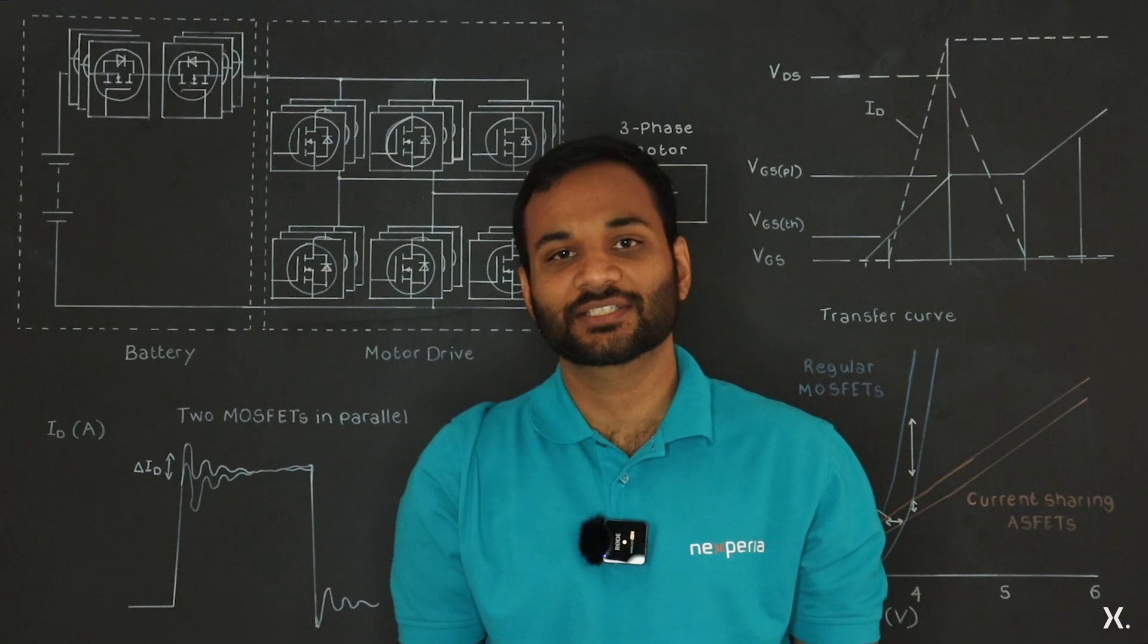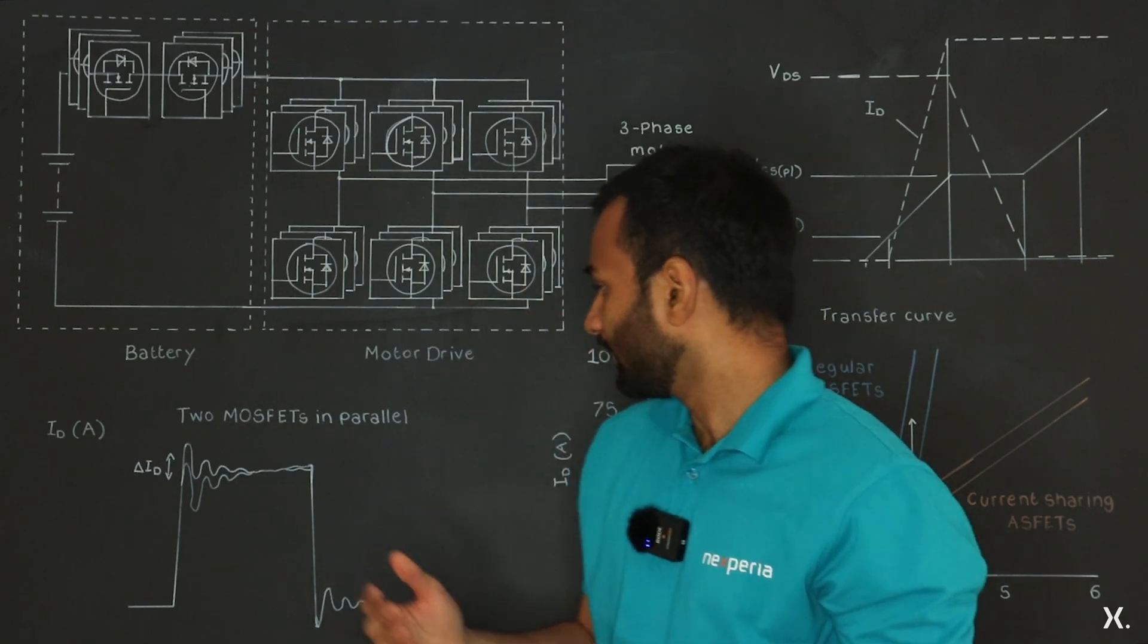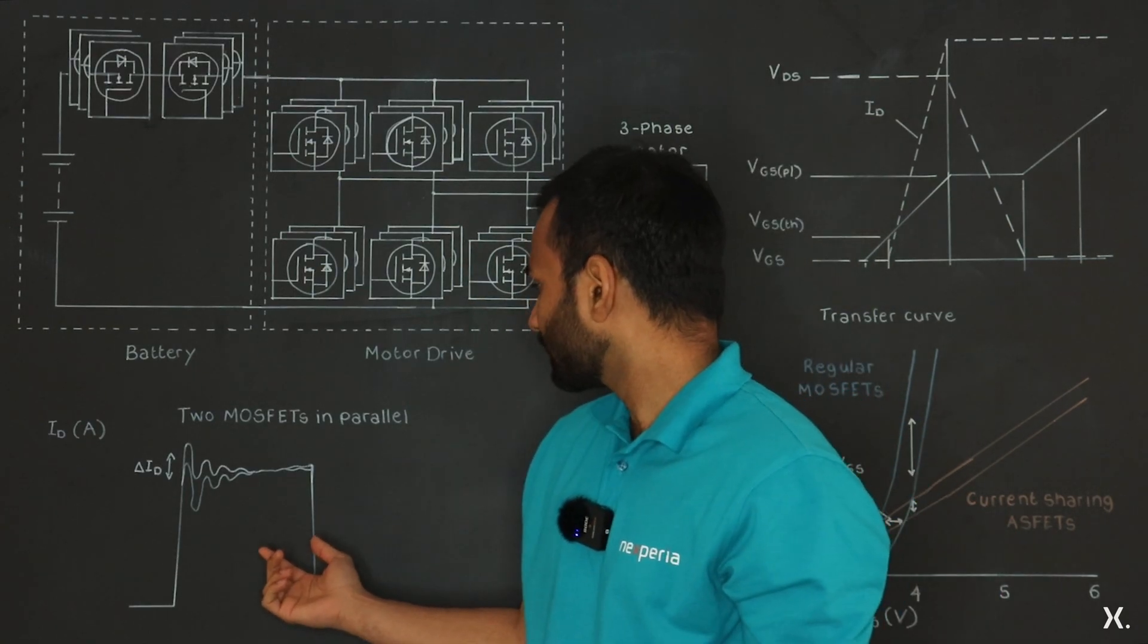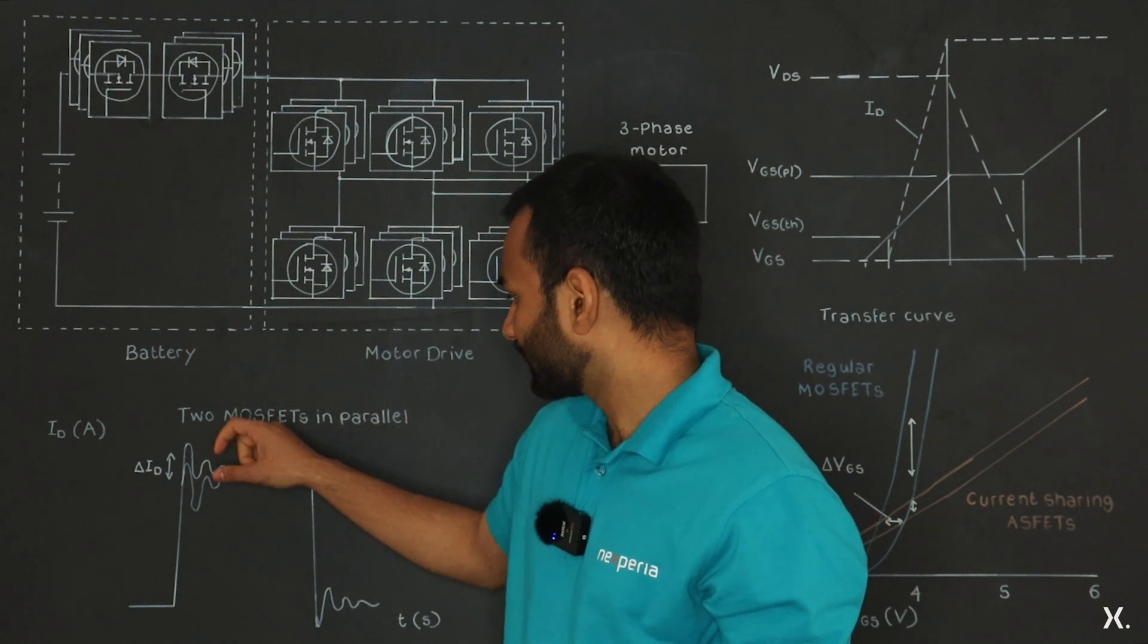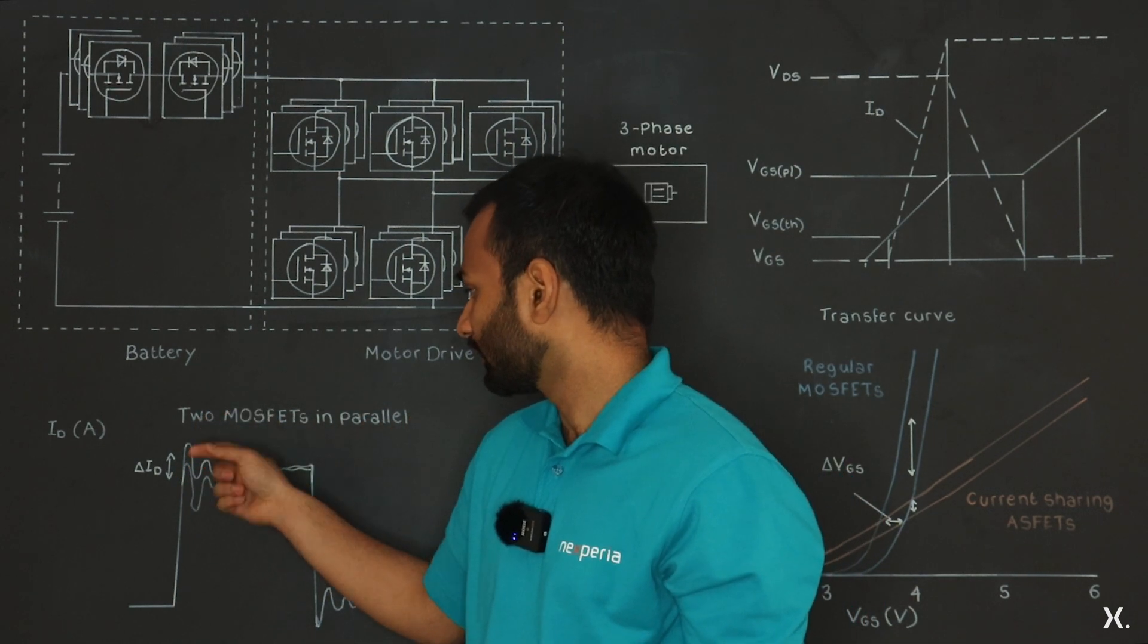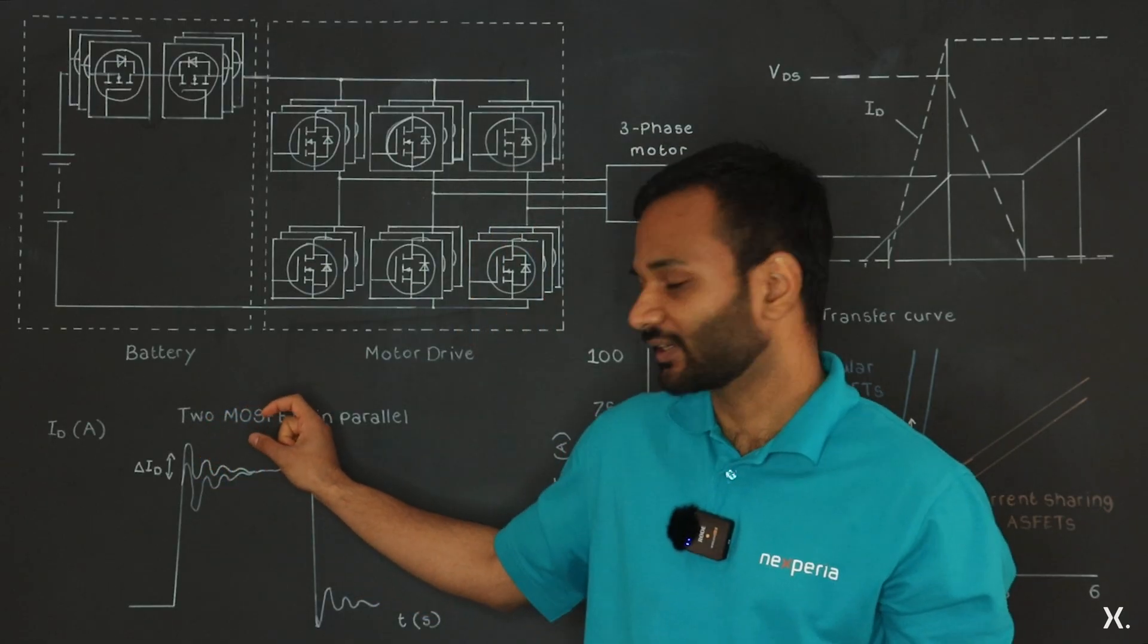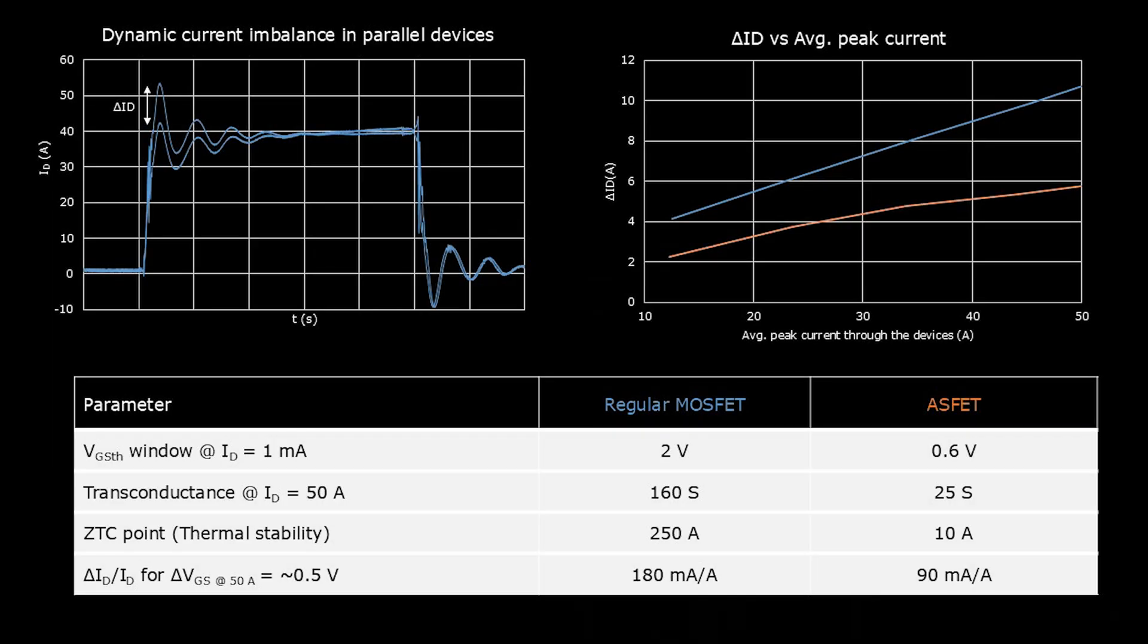Let's see how these devices behave in a switching circuit. Here are the two device currents which are in parallel with the delta ID, that is the current imbalance highlighted. It is the difference in the peak currents of the devices. On the left, we see two regular MOSFETs in a switching circuit with a delta ID of 10A with an average of 45A.